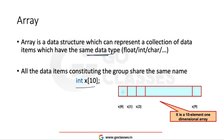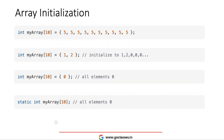You cannot store one integer in this block and one character in this block and one float in another block. You have to store either all integers or all floats. If you have declared int x[10] then you have to store all integers. If you have declared float x[10] then you have to store all floats.